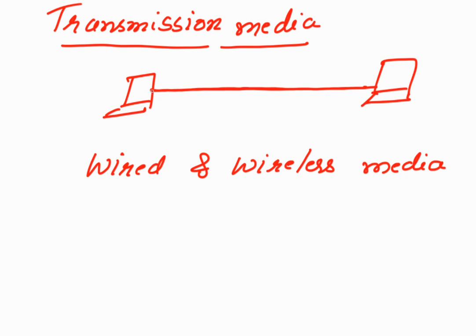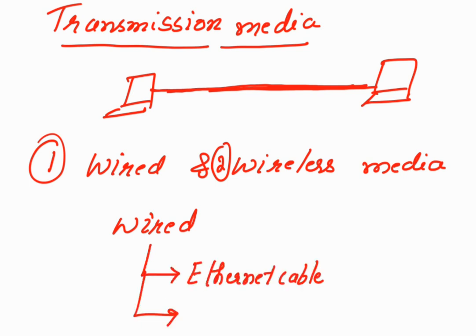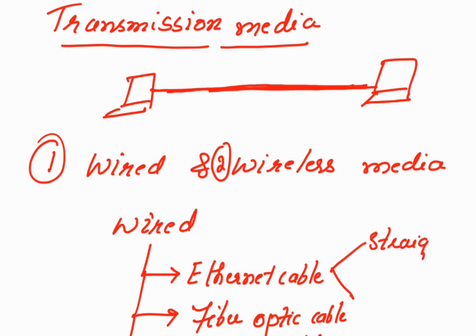Unless you connect two nodes with a cable, data cannot be transmitted from sender to receiver. Transmission medium is of two types: wired and wireless. In the wired medium, different types of cables include: ethernet cable, fiber optic cable, coaxial cable, and USB cable. Ethernet cable can further be of two types: straight-through cable and crossover cable.